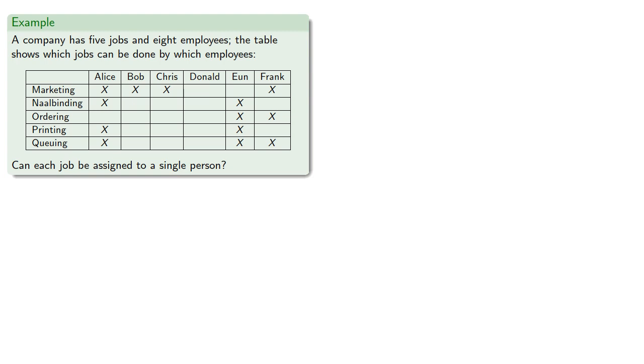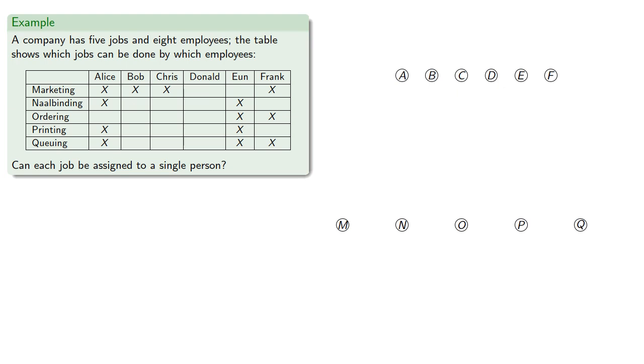Let's consider the jobs problem. Suppose a company has five jobs and eight employees. The table shows which jobs can be done by which employee. Can each job be assigned to a single person? So first we'll draw a graph with the employees and the jobs represented as vertices and edges joining an employee who can do a job.